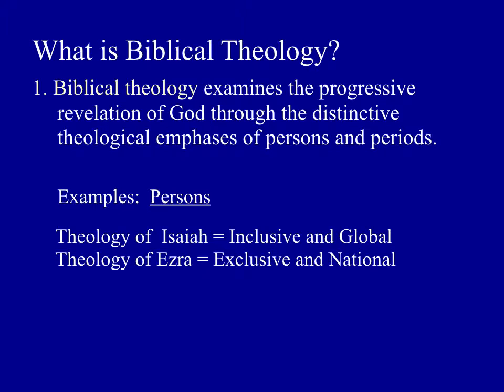Ezra, by contrast, has a much stronger focus on separation and the distinct identity of the people of God. The book of Ezra is written after the return from Babylonian exile, and there was a strong thread of syncretism with the pagan peoples around Israel. So Ezra calls on the people of Israel to separate themselves from the idolatrous influences around them. They are to be holy and set apart. This doesn't contradict Isaiah, but it's a difference in emphasis — Isaiah's theology much more global and inclusive, Ezra's much more separationist and exclusive.